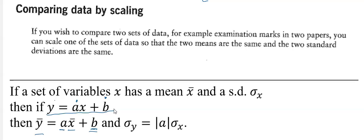Standard deviation is simply a measure of spread. If you take everyone's mark in a class and add five to them, they basically just shift up by five but are just as spread out as they were before. So adding b does not do anything to the standard deviation.